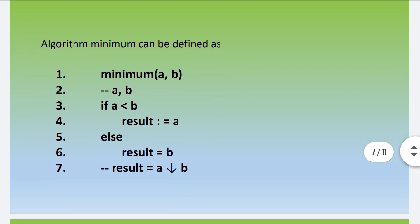If a is greater than b, then the condition is false, so the else part executes. In that case the result variable stores the value of b. So if a is less than b — condition true — result equals a. Otherwise — condition false — else part executes and result equals b. This is one simple algorithm for a conditional statement.